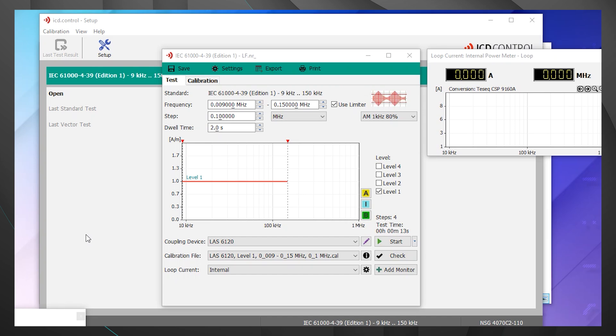Here is our test menu for IEC 61000-4-39. You will see we're currently in the test tab. We have our standard listed along the top, as well as the corresponding frequency range. Below that we have our step, next to that the modulation, and then below the step we have our dwell time. Just below the dwell time we have our graph. To the right of that, our test level. And then along the bottom we have our coupling device, calibration file, and loop current. Prior to running this test we have to run the calibration. So let's click on the calibration tab.